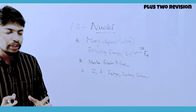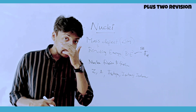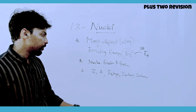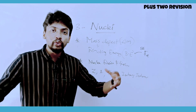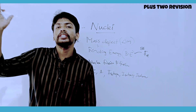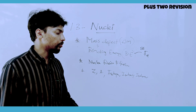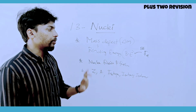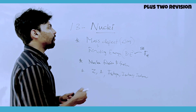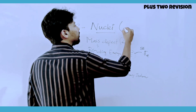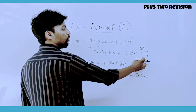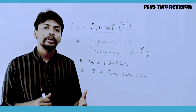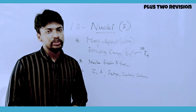There are two more parts: nuclear fission related to atom bombs, and nuclear fusion related to hydrogen bombs and stars. Understanding the binding energy curve helps you see the stability of nuclei.